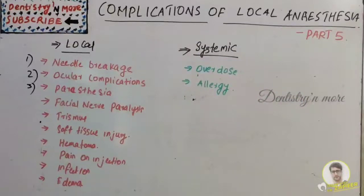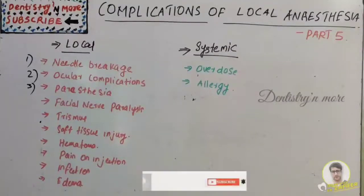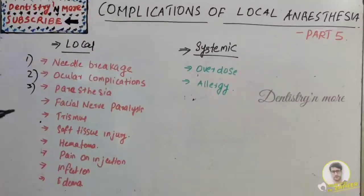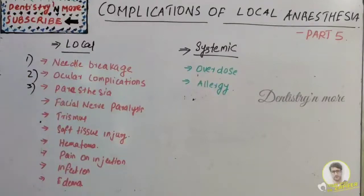The third complication is paresthesia. Main causes include trauma to the nerve while giving a block, local anesthesia contaminated by alcohol or sterilizing solution resulting in edema and increased pressure in the region of the nerve ending, inserting the needle inside a foramen, and hemorrhage causing increased pressure. Prevention involves proper care and handling of the injection control and cartridge.